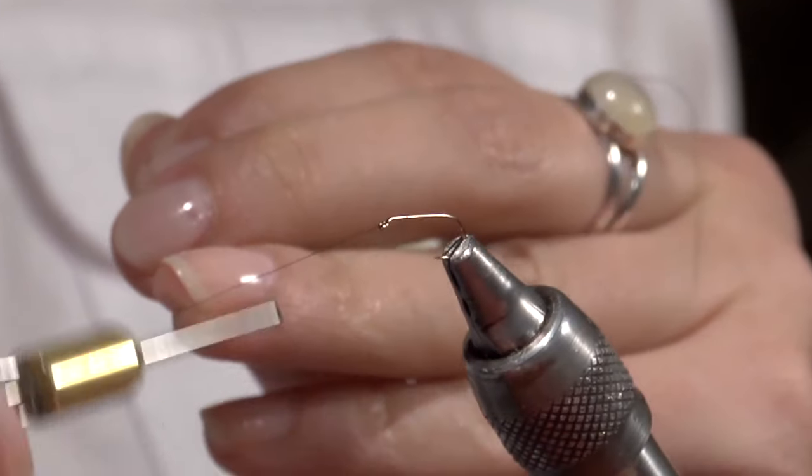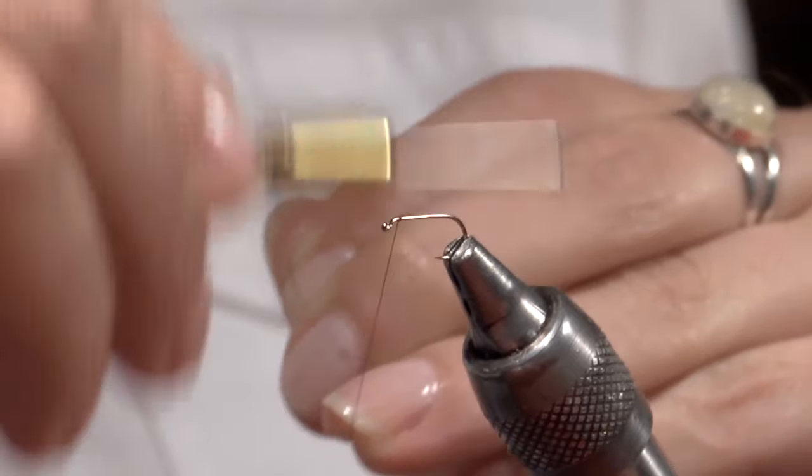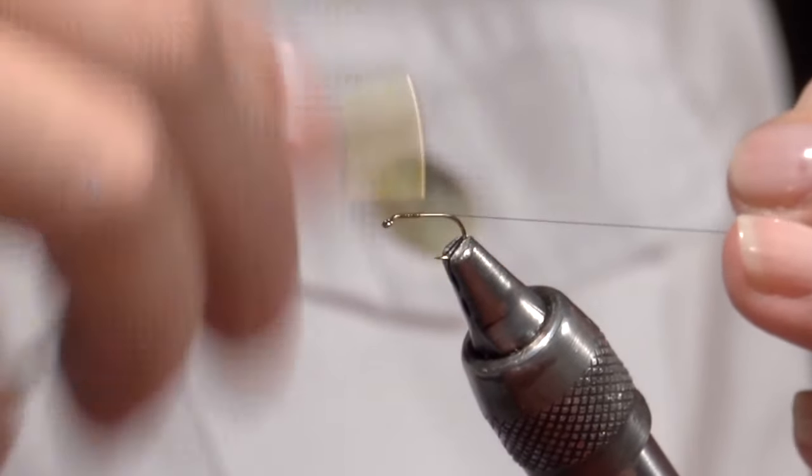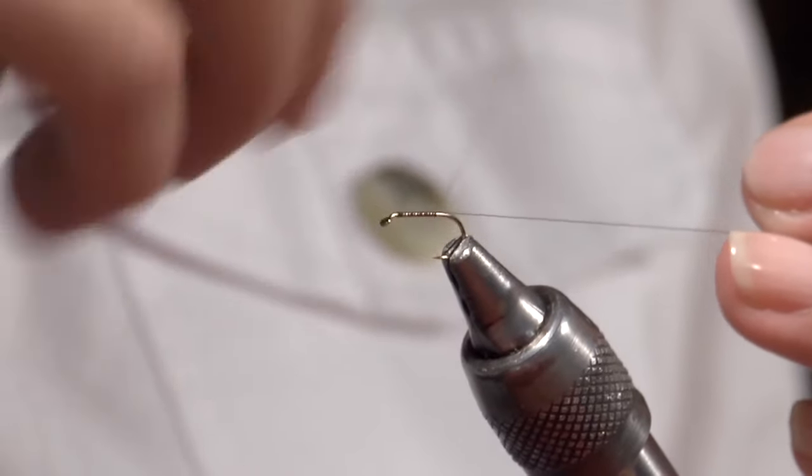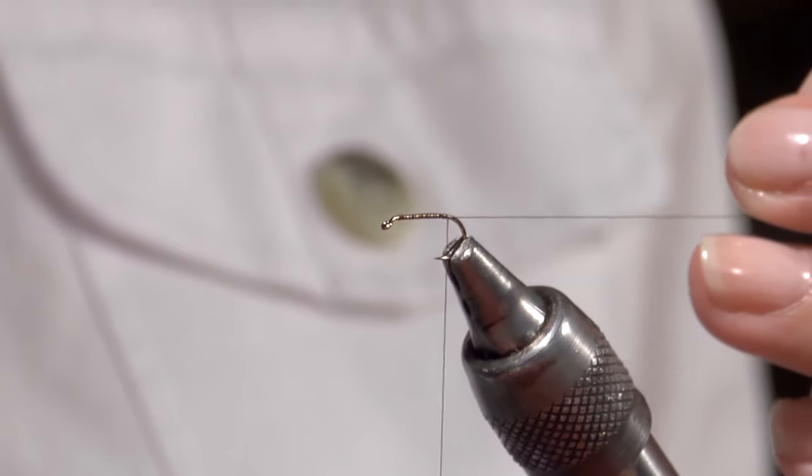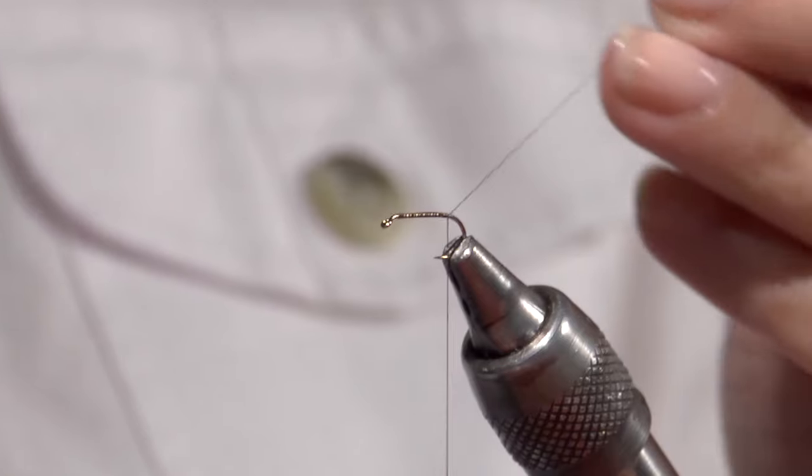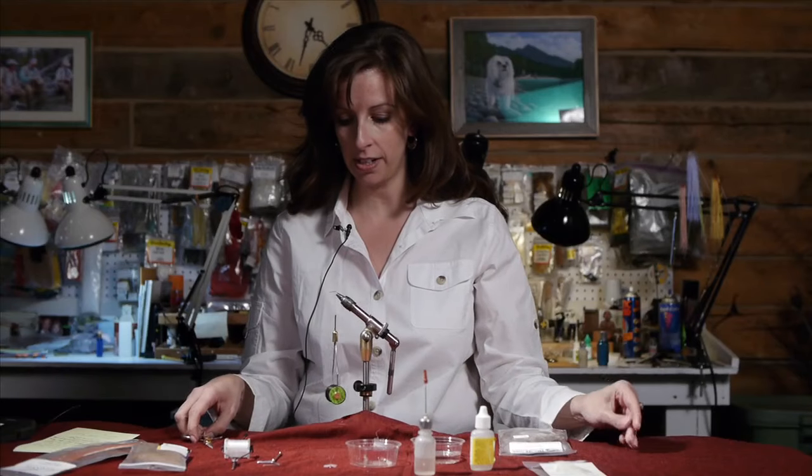So I'm gonna start with a thread base. I'm using a brown six-aught. Start a little bit behind the eye and I run it down to about hook point. Trim off my little tag end there.